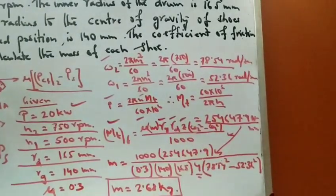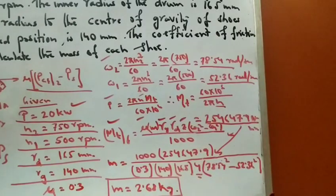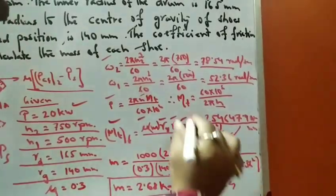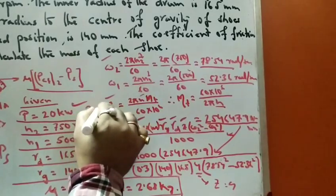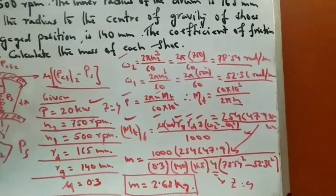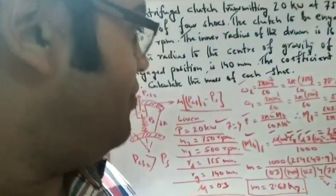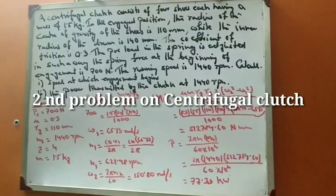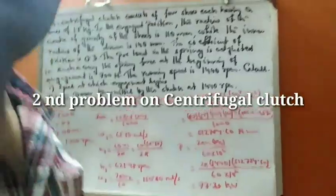Substituting Z = 4 (four shoes) and all other known values, we calculate the mass m = 2.68 kg. This is the mass for a single shoe. So each of the four shoes has a mass of 2.68 kg.